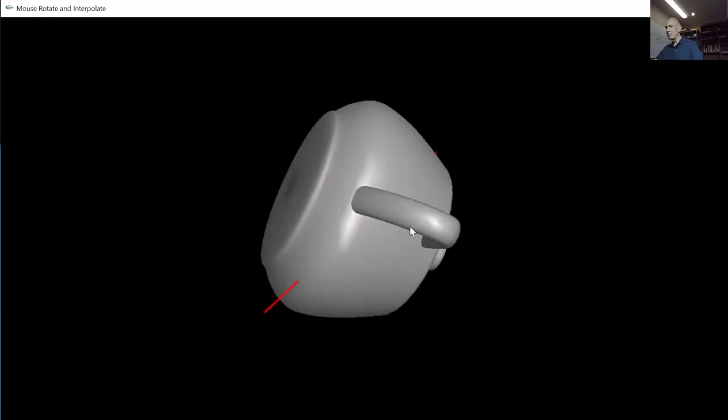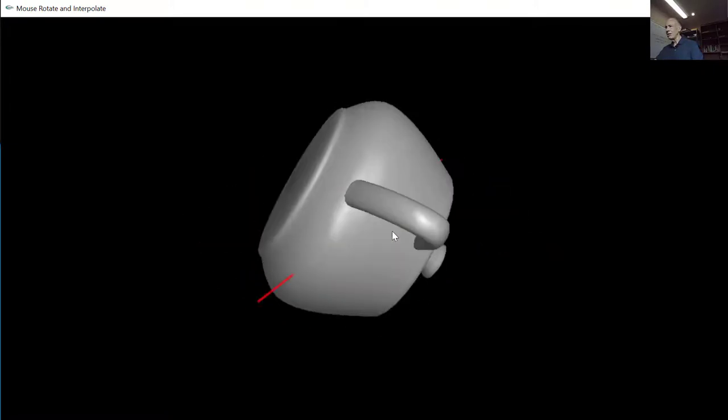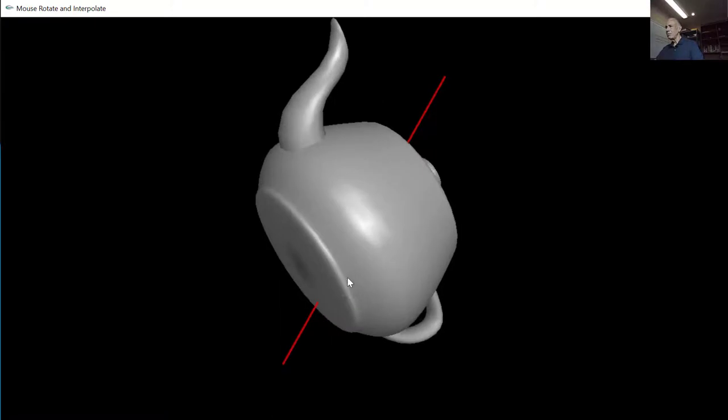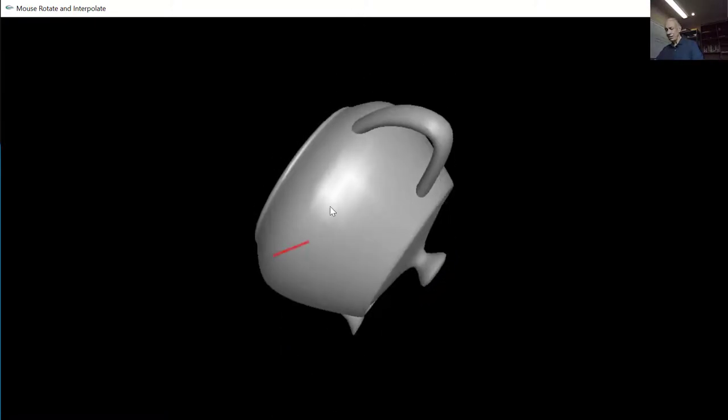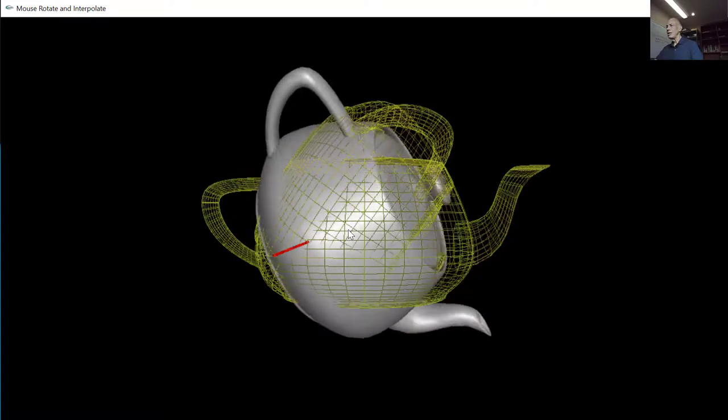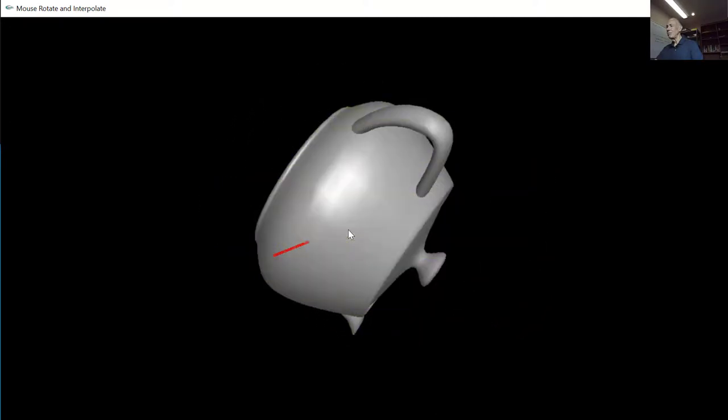And no matter how I rotate the teapot, if I drag the mouse from left to right, it rotates on the y-axis. From top to bottom, it rotates on the x-axis. And no matter how I end up with a teapot there, there's a fixed rotation axis, which is shown with that red line, that takes us from the standard configuration to the newly rotated place.